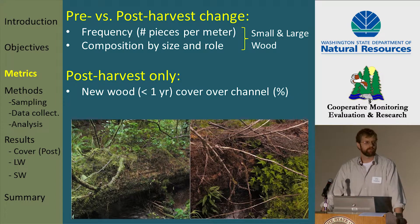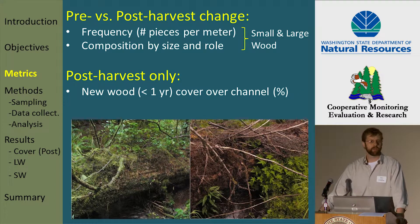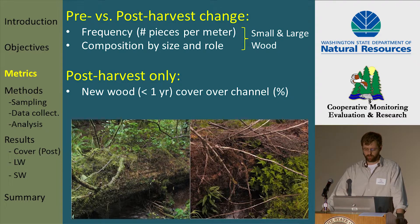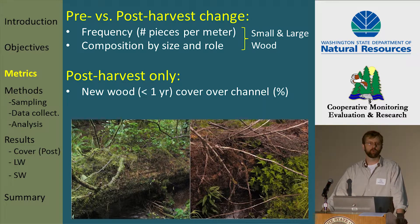Our metrics for evaluating pre versus post-harvest change are the frequency of pieces — simply the number of small and large pieces per meter — and then the composition of all pieces according to their size or diameter class and their role in our streams. A metric we added during the post-harvest period was an estimate of total wood cover over our stream channels: wood that was less than one year old, essentially logging slash.